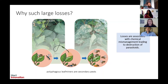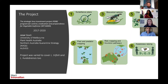A little about the project: it's a Hort Innovation funded project through the vegetable, nursery, melons and potato levies. It started in 2017 and is finishing in November this year, led by CESAR with partners including the University of Melbourne, Plant Health Australia, Northern Australia Quarantine Strategy and AusVeg. The project was varied last year to also cover those other exotic leaf miners.